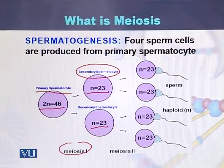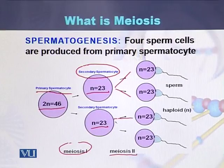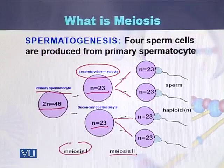As a result of meiosis 2, this cell again divides — similar to mitosis — into 2 daughter cells, and the other cell also divides into 2 daughter cells. So as a result of meiosis, 1 cell produces 4 haploid cells. These haploid cells in the case of males are called sperms.